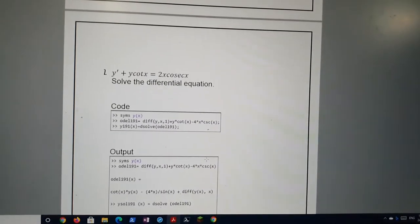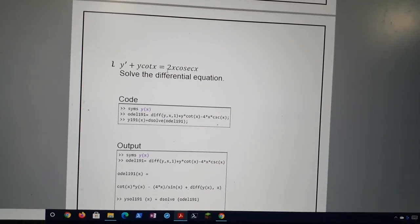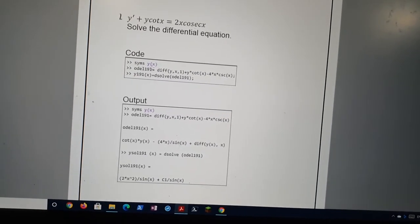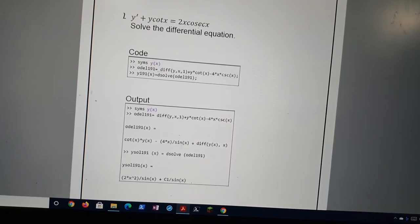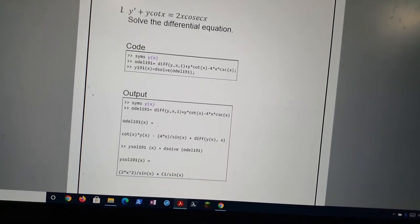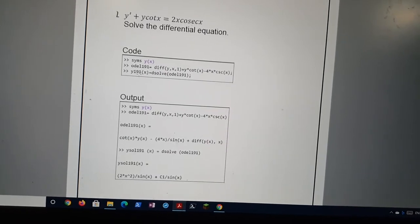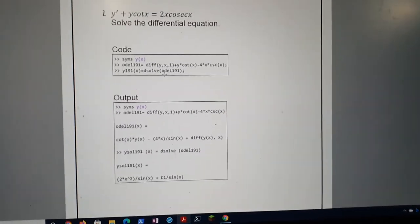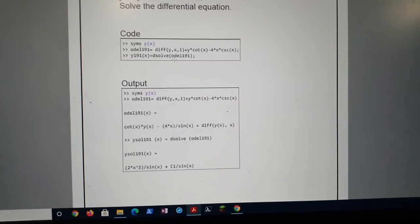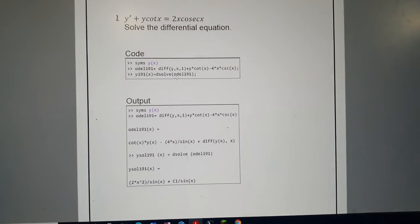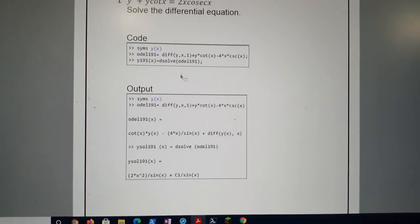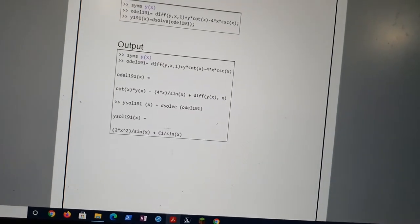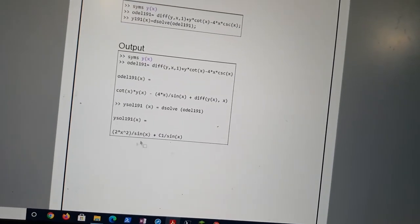Then we have the second equation: y' + y cot x = 2x cosec x. Here again we use syms x to create the variable y(x). And we have ode191 again as a variable. And this is the same question we have on top. Again we use ysolve here and Dsolve for the question. Dsolve is for differential equations where the equation is a symbolic equation. So here since we don't have a definite unique value, we get a constant C1. C1 can be anything, any constant value. So this is the final answer we get here.